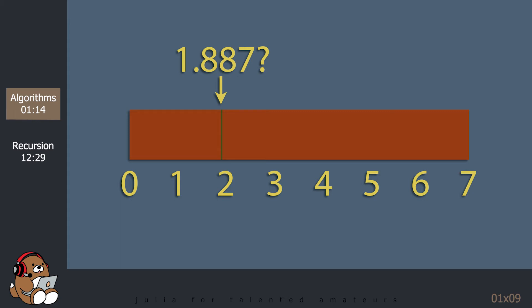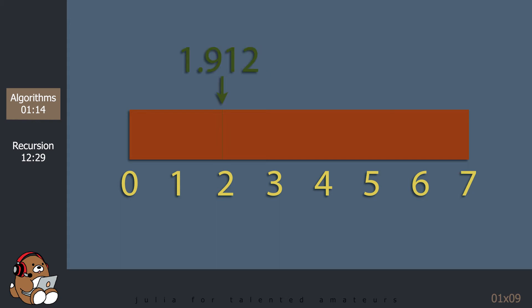It repeats this process until it finds a solution within the sensitivity you set. You can see why bisection search is such a descriptive term — the algorithm is literally bisecting a line in the middle to guess at a solution. The term binary search is more commonly used, but bisection search is a good way to remember what this algorithm is actually doing.